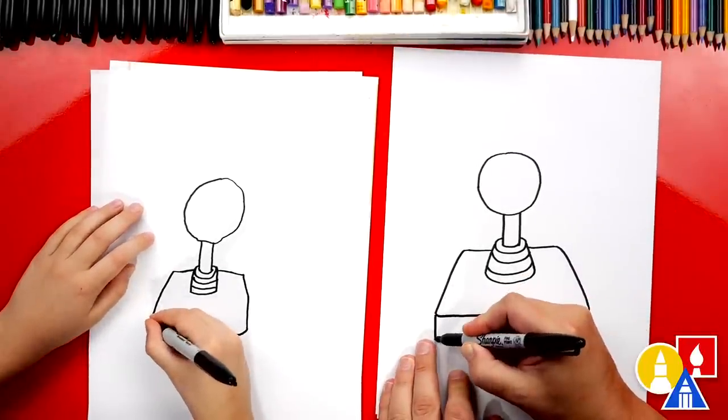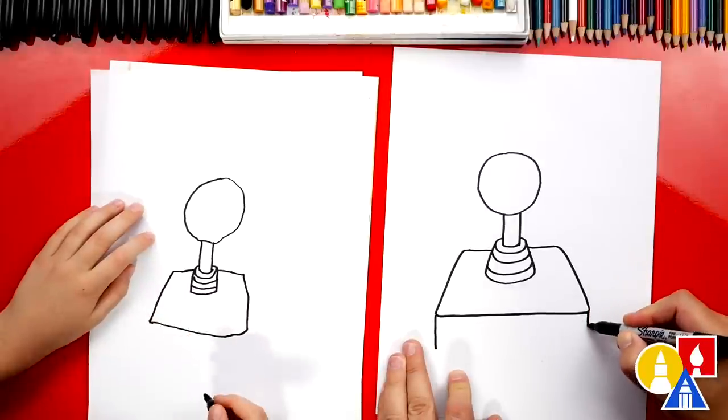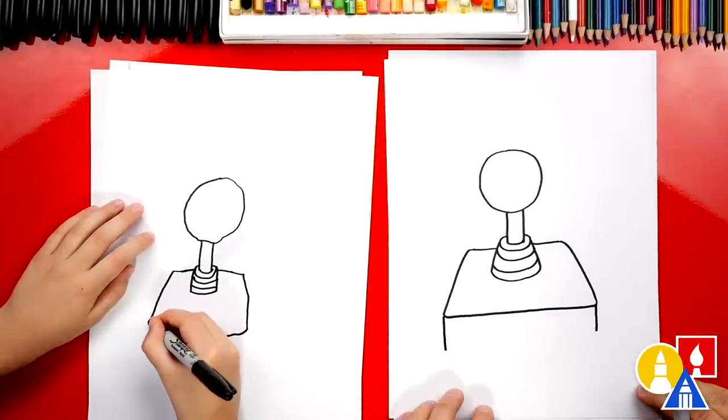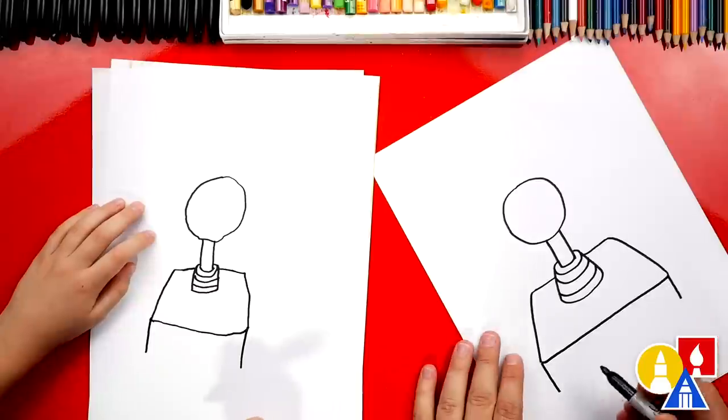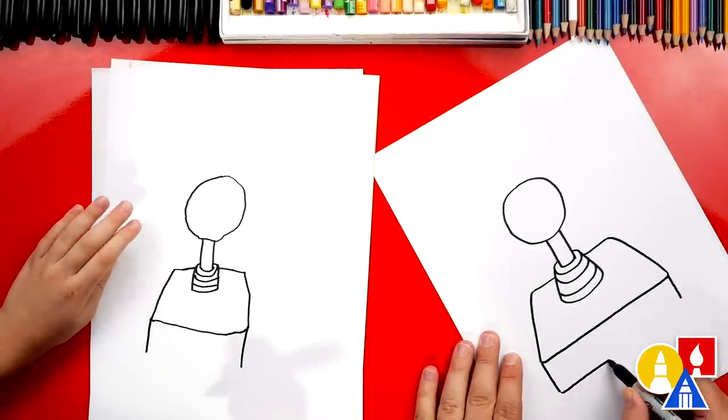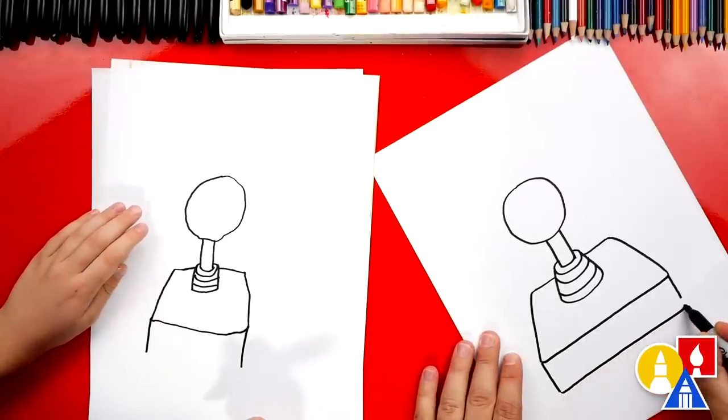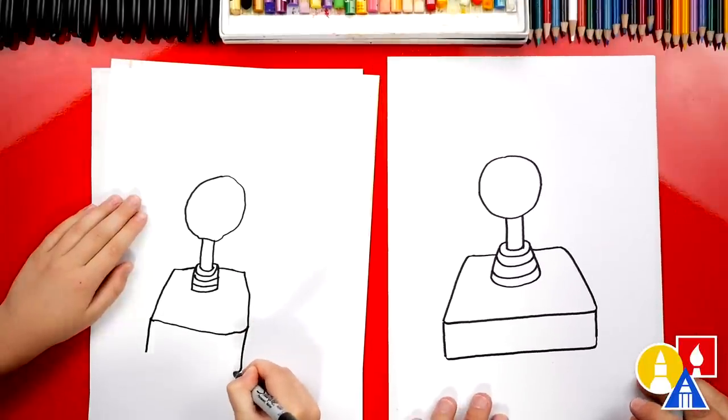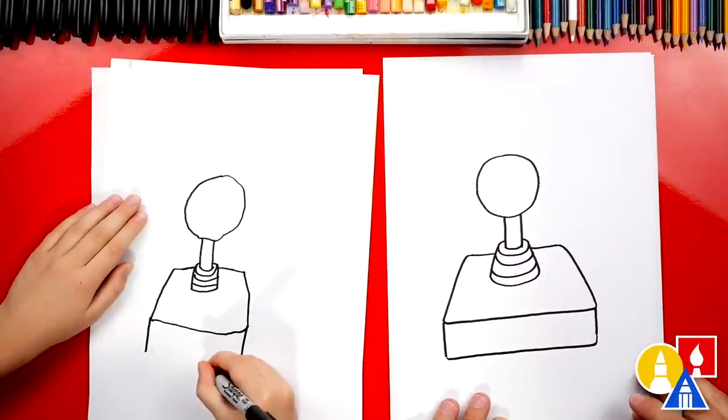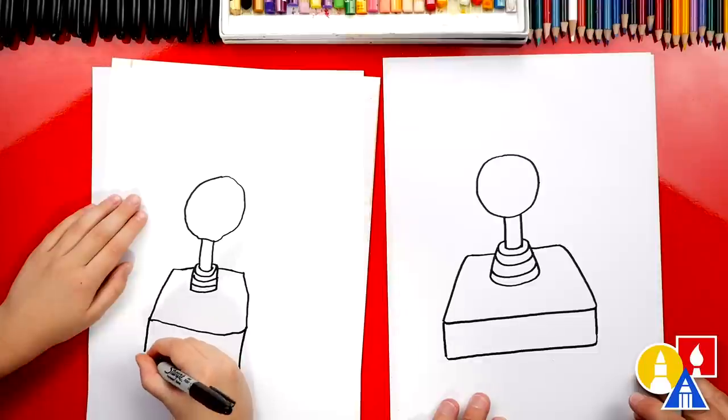Now let's draw a short line coming straight down on the left and also on the right. Now let's connect these two lines also. I'm going to turn my paper sideways. Sometimes that makes it easier to draw a straight line. All right. We did it.